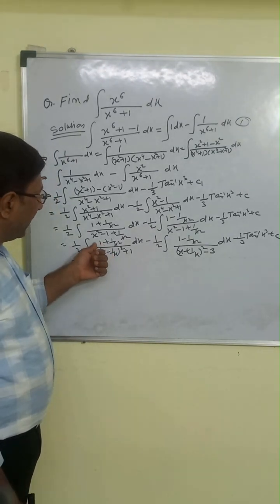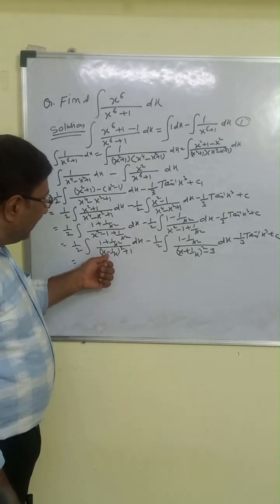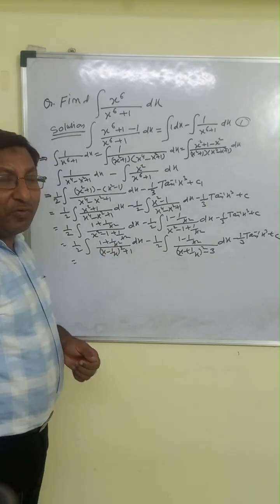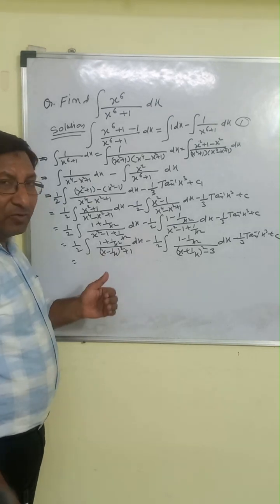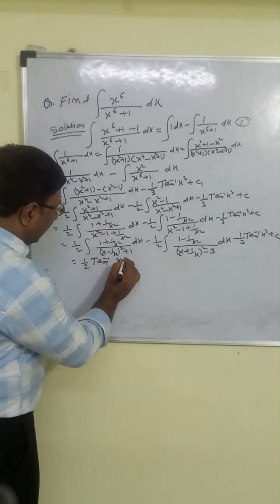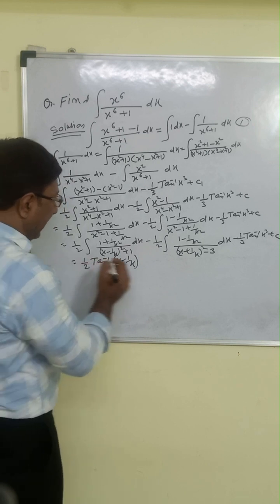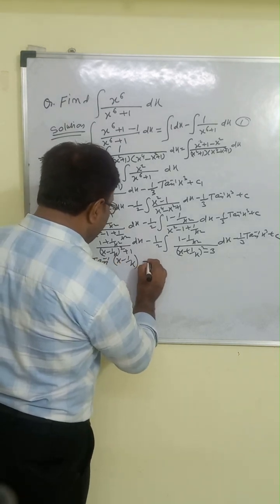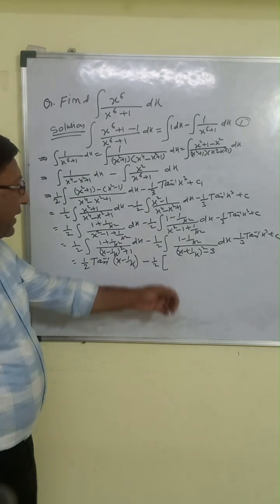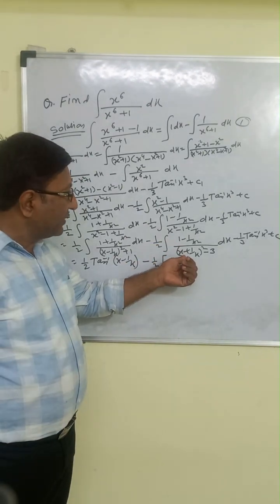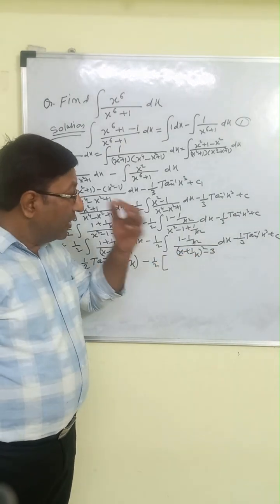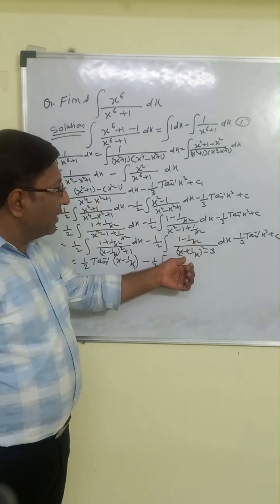When we put x minus 1/x equal to t, the derivative will be 1 plus 1/x², so that cancels and we get only t² plus 1 dt. Integration of 1/(t² + 1) is arctan(t)/a, and since a is 1, it is arctan(t) only. So this part gives 1/2 arctan(x - 1/x).